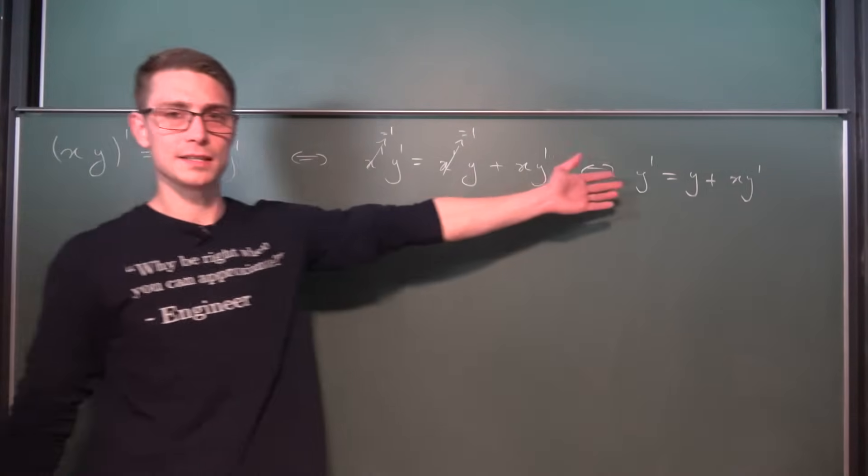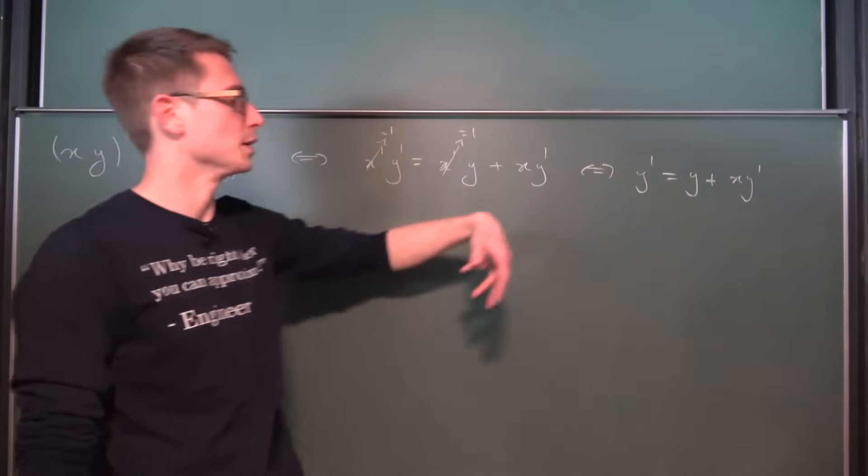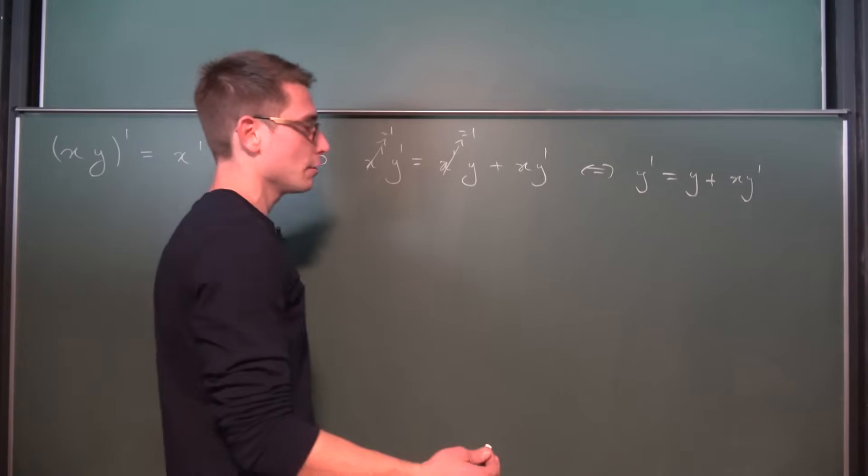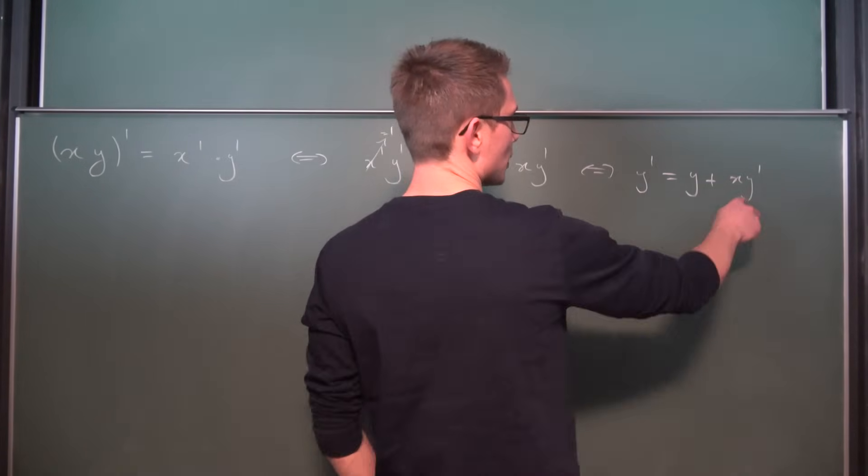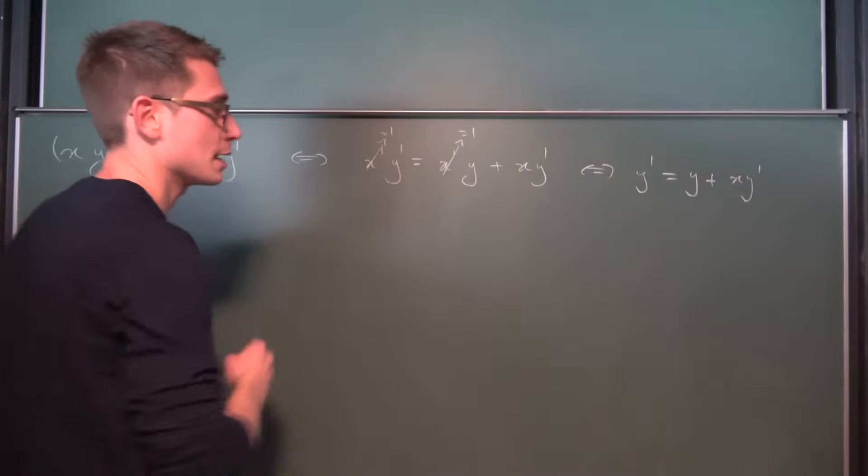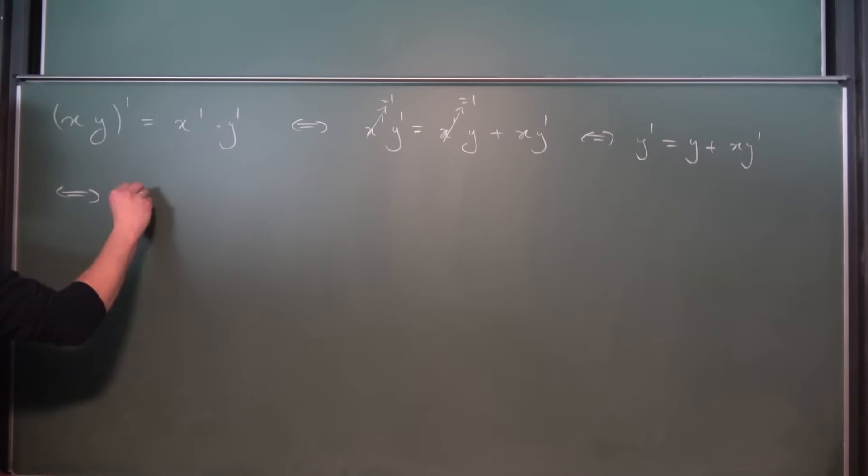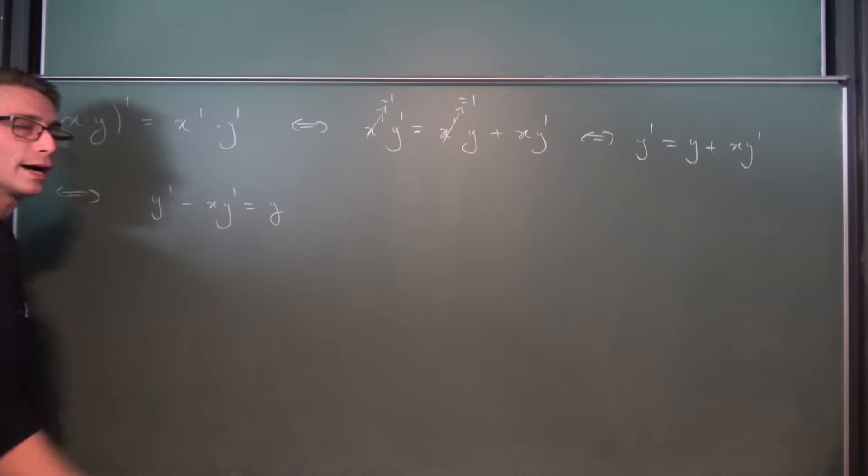And this right here is our differential equation written in a different form. And now we are simply going to separate it. First things first, what we're gonna do is we're gonna subtract x times y prime on both sides. The reason for that is if we do so, we have y prime minus x times y prime is equal to y.